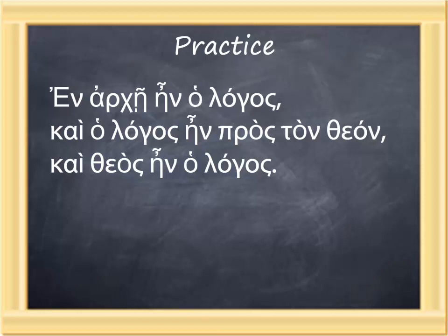Line two begins with kai, which has a grave accent on the last syllable because it is followed by another word — that's why the grave accent is used instead of the acute on the final syllable. Then our friend ha again, and logos again, and ain again. The fifth word is a single syllable with emphasis on the omicron: pros. It is followed by the article ton, and then the word for God. The whole line reads: kai ha logos ain pros ton theon. Translation: and the Word was with God.